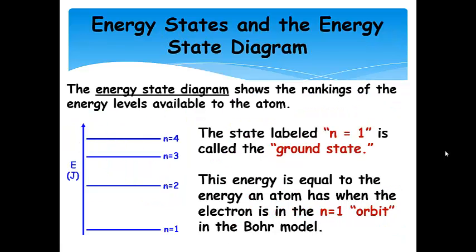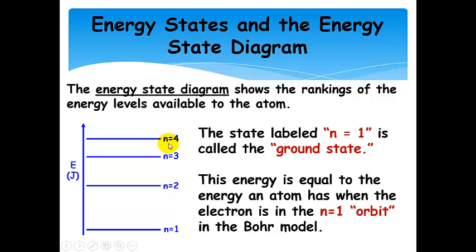Now let's introduce an energy state diagram. This is a general concept you're going to see not just in the Bohr model. Basically what it is, is a ranking of the energy levels in an atom. In this case, it's for the Bohr model and the hydrogen atom. Energy is in joules and energy increases as you go up. You can also see that the energy levels increase with increasing n — so the energy of those energy states increases with increasing n.